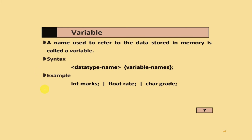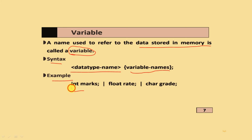What is a variable? A variable is used to refer to data stored in memory. The syntax is: data type name, then write the variable name. Some examples: int marks (where int is the data type and marks is the variable name), float rate, char grade - these are examples of variables.